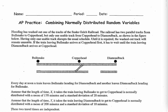So essentially what's going on: we have a train leaving Bullsnake and approaching Copperhead, and a train leaving Diamondback and approaching Copperhead. We really don't want them to crash at Copperhead, so the train from Diamondback is going to switch onto a different track. There's a possibility the train from Bullsnake will have to stop and wait for the Diamondback train to cross the switch and pass by. Conveniently, the travel times are distributed normally.